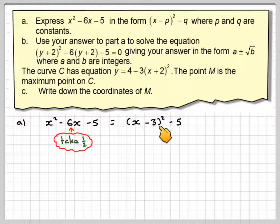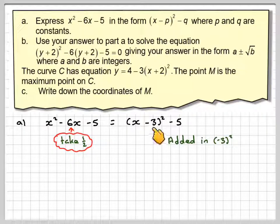But in doing this process, we've actually added something in. What we've added in is (-3)². It's always this last bit here, squared. So -3² is 9.